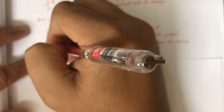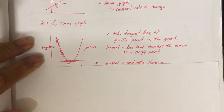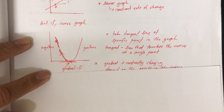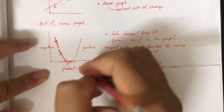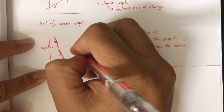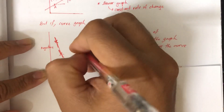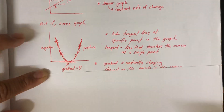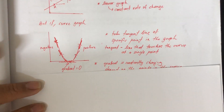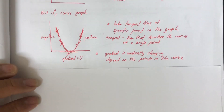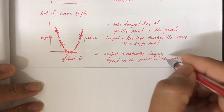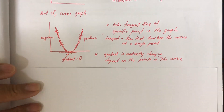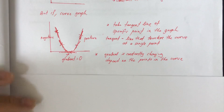It's much more steeper compared to this one, which is also negative but less steep. Until a certain point, the gradient becomes zero. Then for this point, the gradient becomes positive, and it becomes more steep but more positive. As we can see from the graph, the gradient is constantly changing depending on the point in the curve.